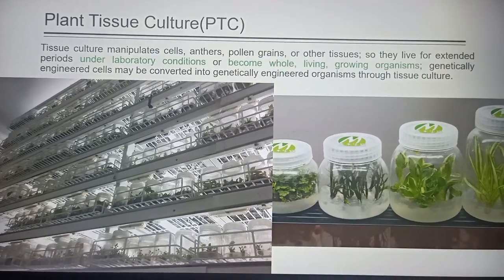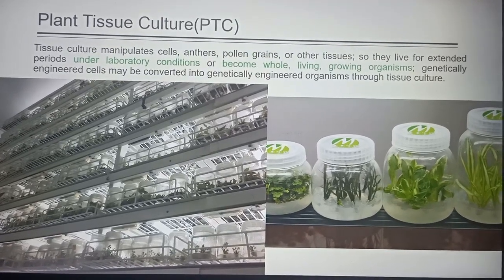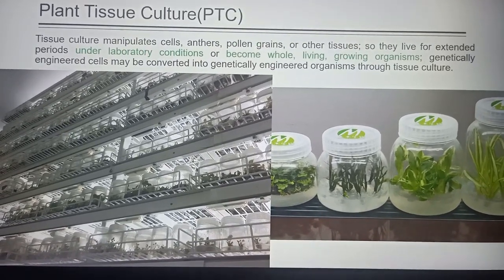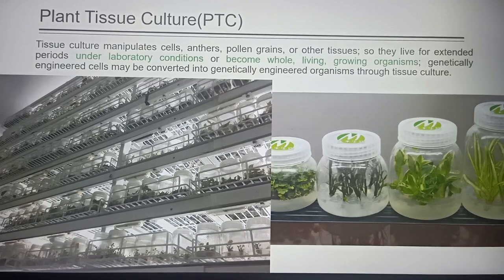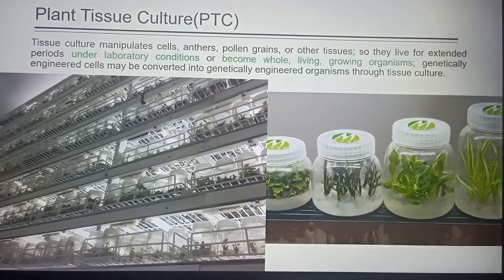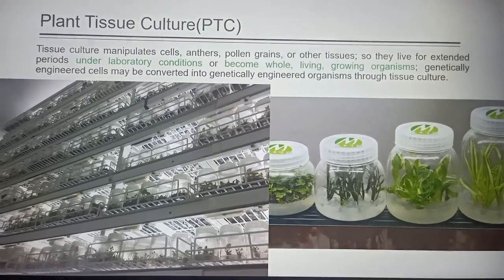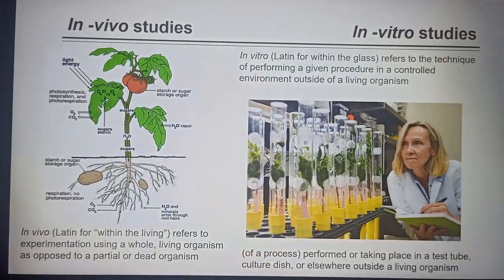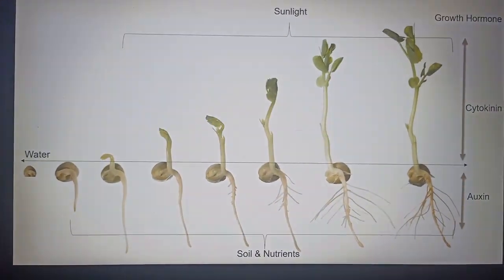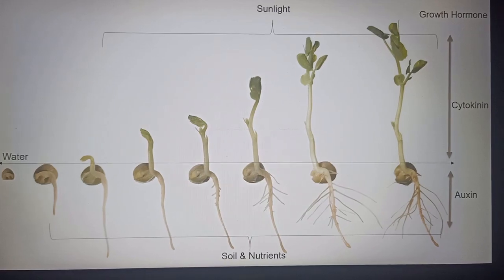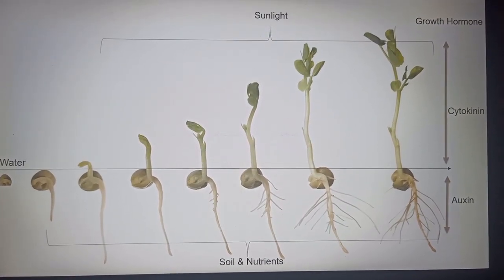Plant tissue culture is growing plants in an artificial environment, in artificial medium, with the help of growth hormones and nutrition. You should know how a seed germinates naturally.